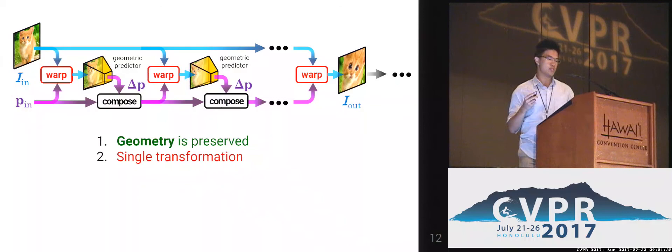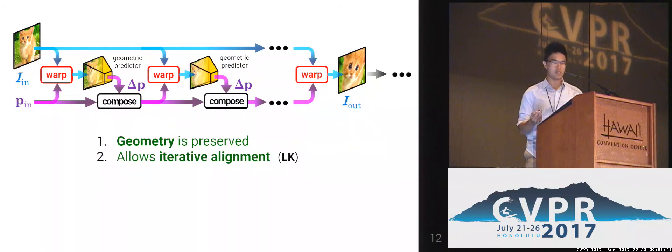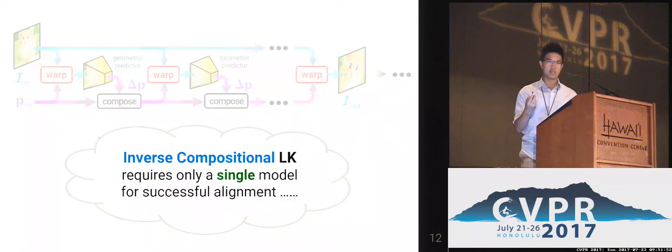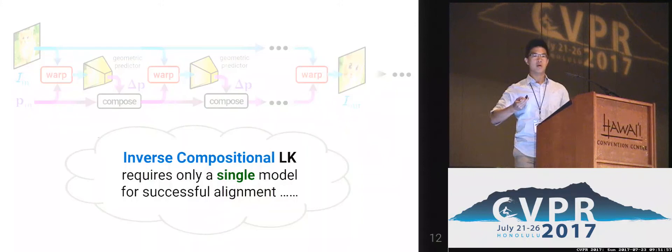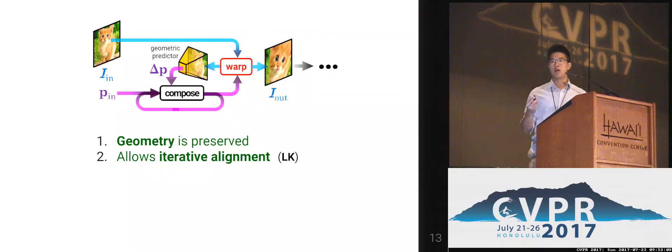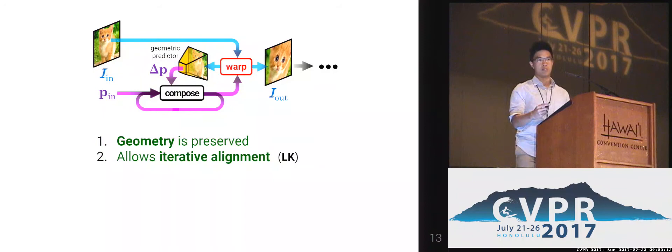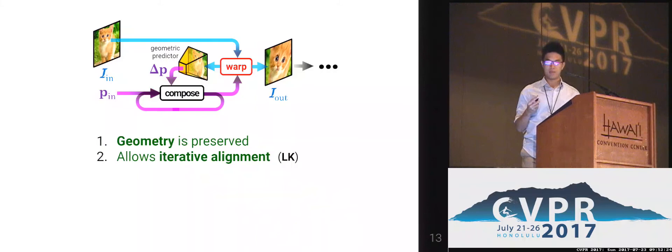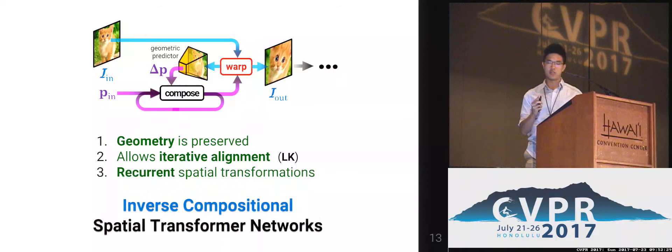Since it doesn't predict single transformations anymore, we can see that it also allows iterative alignment. From the inverse compositional LK insight, we only actually need a single model for this kind of alignment. So we can roll up this iterative alignment framework and make it a recurrent version. This has a very high analogy to the inverse compositional LK algorithm — we only need a single model to iteratively predict the geometric update, using the same model over and over again, and then feed it to the subsequent network. This is the final formulation of our proposed Inverse Compositional Spatial Transformer Network (ICSTN).